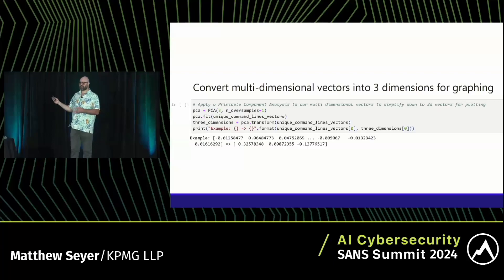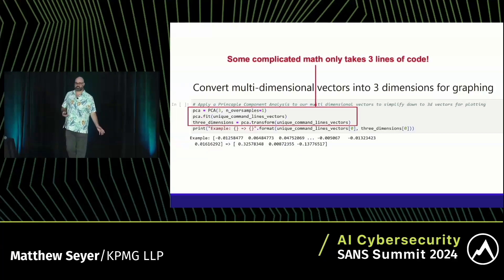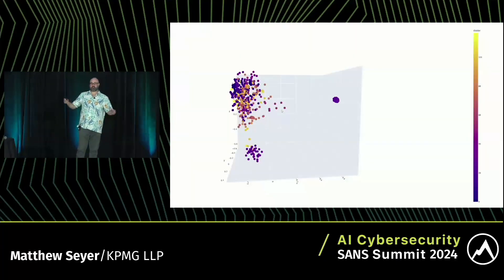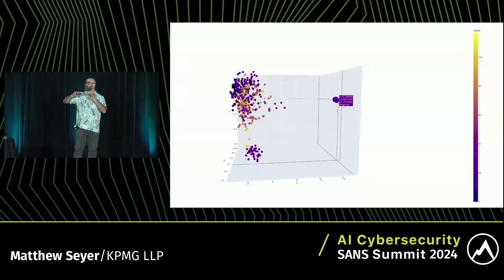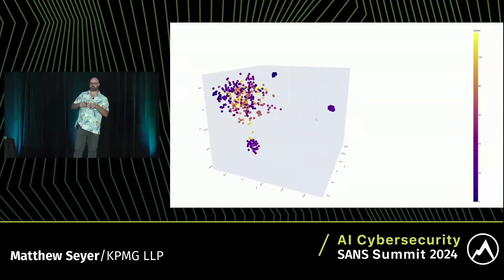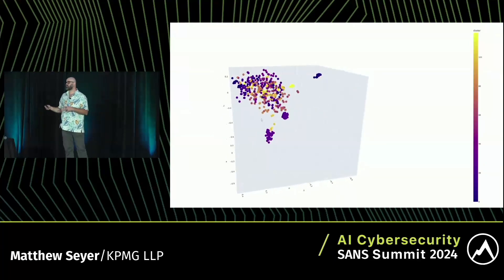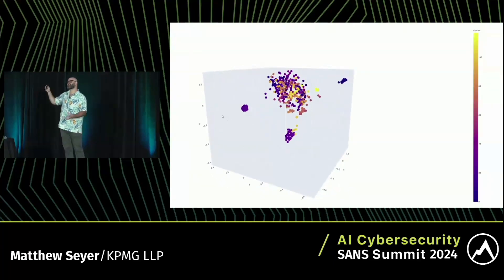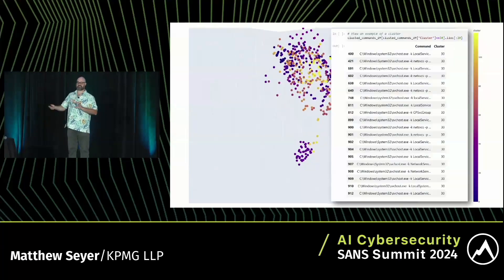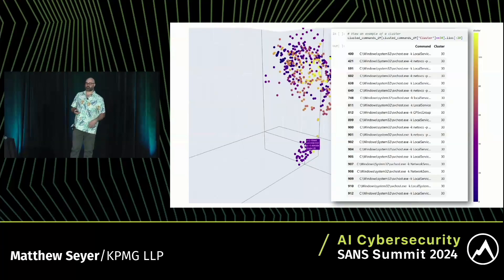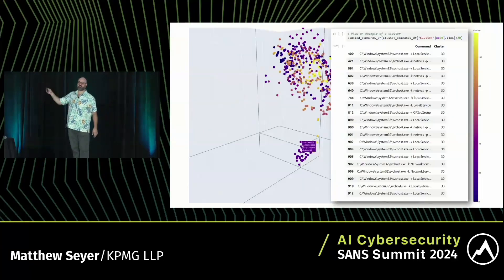What if we wanted to view how these relations look? We can use PCA to convert these down — go from a thousand dimensions into three dimensions. Three lines of code and you just did some crazy math. Now if I take all of those big numbers, use PCA to convert them down to three numbers, I can graph this in a three-dimensional view. This is what it looks like when you take the essence of each command and sort them by similarity. You can say, 'This purple group on the bottom is cluster 30' — and those are a bunch of SVC host commands. Now you can see how far those stand out compared to all the other commands.